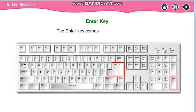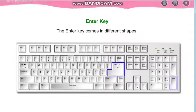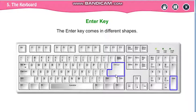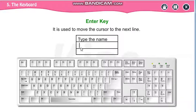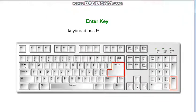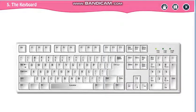Now the enter key. The enter key comes in different shapes — in your keyboard it may be rectangle shaped, but the spelling is E-N-T-E-R, enter. It is present at two places on the keyboard. It is used to move the cursor to a new line. Keyboard has two enter keys.